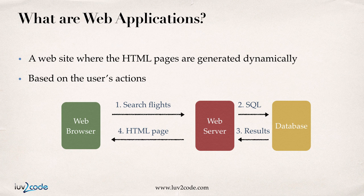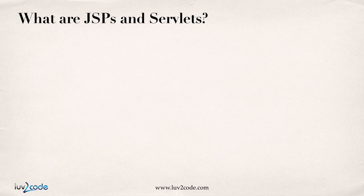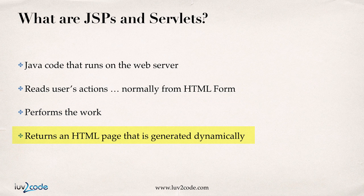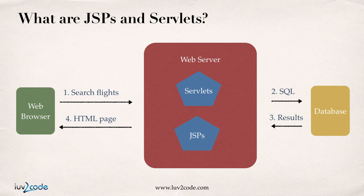What I'll do in this course is show you at a high level how to get started with JSP for building pages. What are JSPs and Servlets? A JSP and Servlet are basically Java code that runs on the web server. They can read user input — normally from an HTML form — then perform the work, maybe talking to a database or a web service. And finally, it'll return an HTML page that's generated dynamically on the fly. Pulling it together: our Servlets and JSPs can run on the web server, read flight information, send it to the database, get the results, and send back an HTML page — that's where Servlets and JSPs fit in your web application architecture.